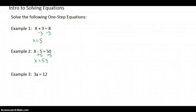What is the opposite of multiplication? If you remember, when nothing is in between, it's multiplication. The opposite is division. We're going to divide both sides by the same number to get x is equal to 4.